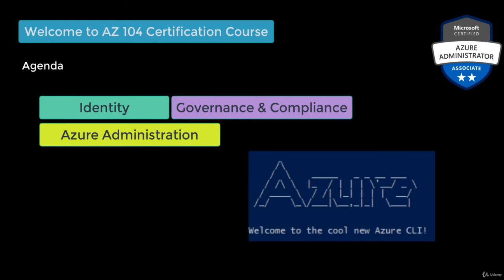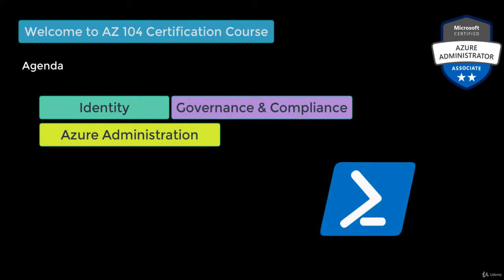Module 3 is about Azure Administration. How do you connect to your Azure resources? You can connect through a phone, PowerShell, CLI, CloudShell, and the Azure portal as well. There are different methods you can employ to connect to Azure and then deploy your services.